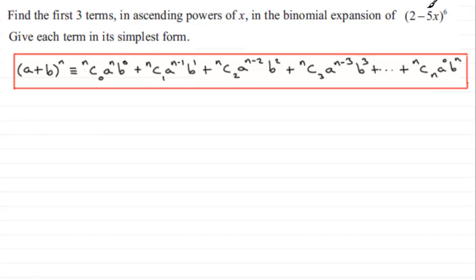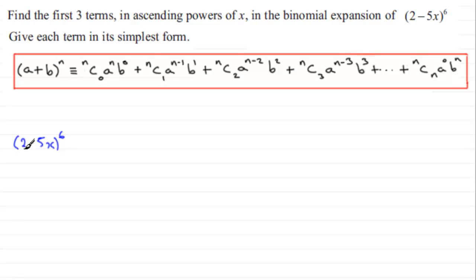Let's get cracking with this. We've got (2 minus 5x) all to the power 6. Comparing this with the formula, you can see that a is going to be 2, b is going to be minus 5x, and the power n is going to be 6.